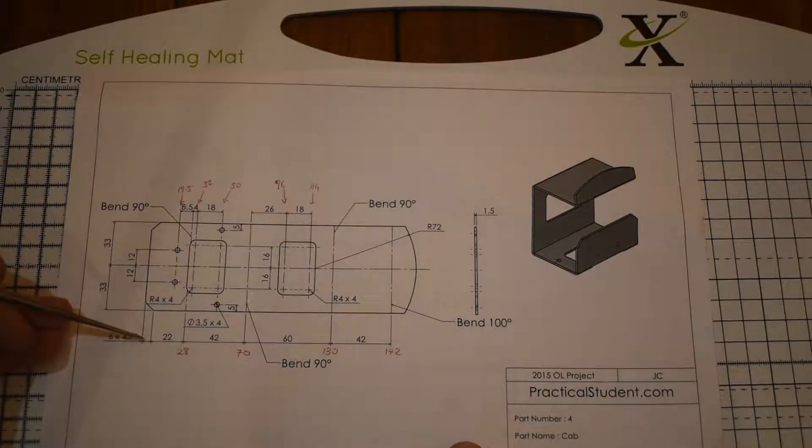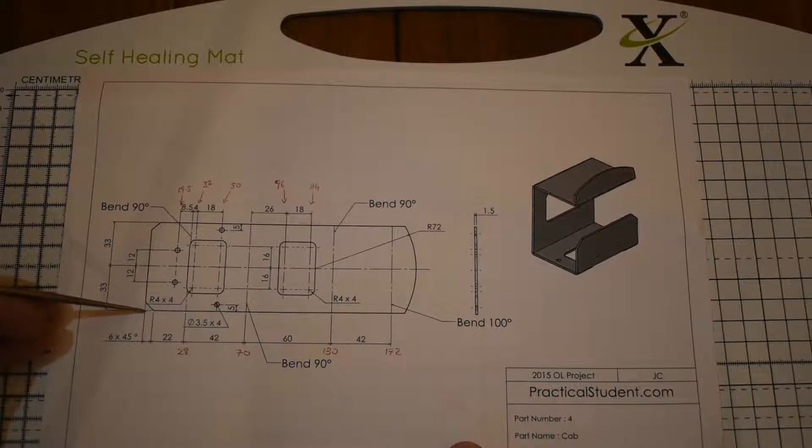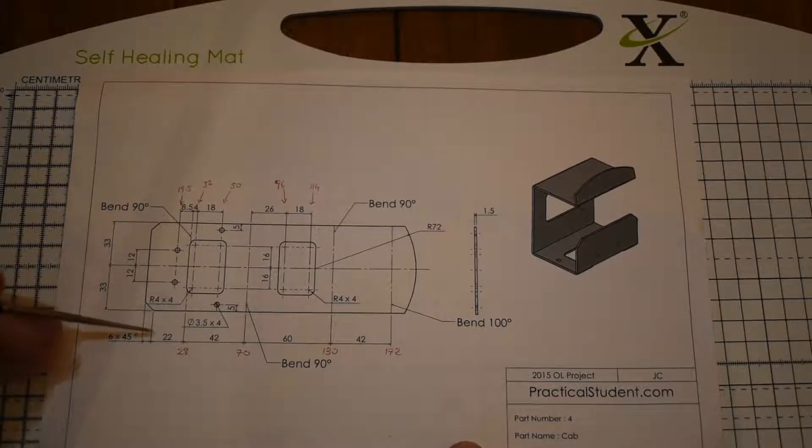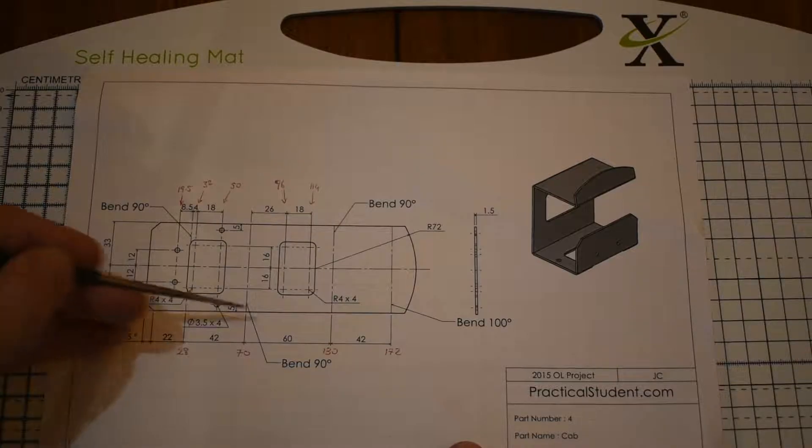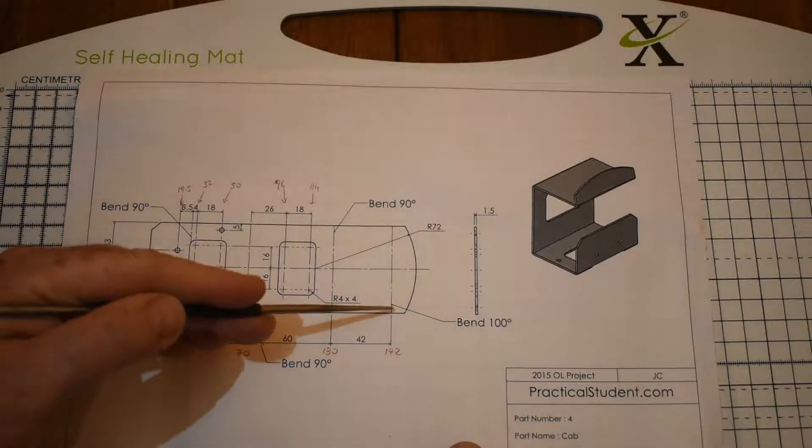These ones are pretty straightforward. This section here is 6 by 45, means that it's 6 this way and 6 this way. So the 22 added to that gave me 28 to here, 70, 130 and 172.